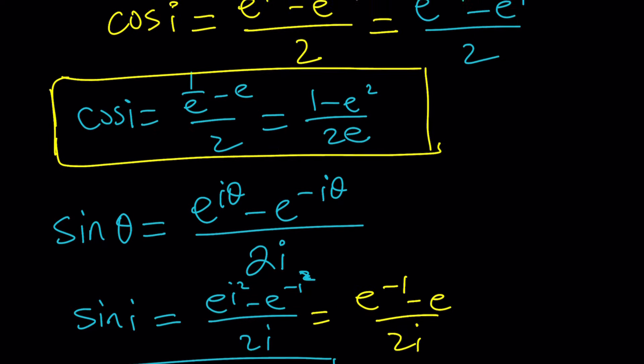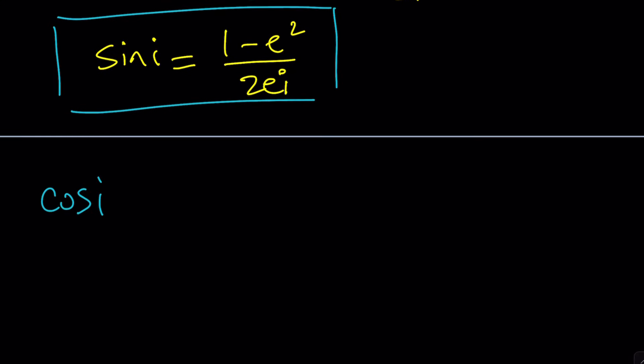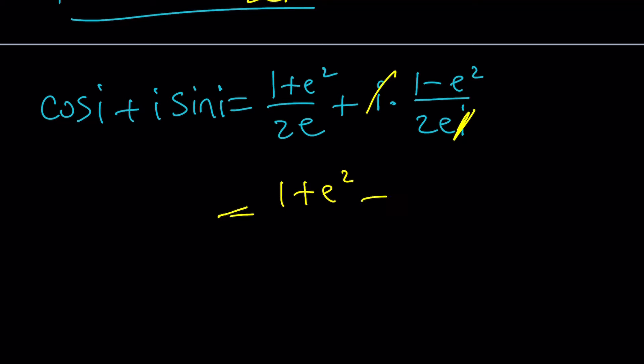I got sine i and cosine i, so why not plug those in, right? Cosine i plus i sine i. Replace cosine i with 1 plus e squared divided by 2e, or not 2e, plus i times sine i which is 1 minus e squared divided by 2ei. Great. Because the i cancels out leaving us with 2e at the bottom, which is a common denominator. So we can go ahead and add the numerators and divide by a common denominator.